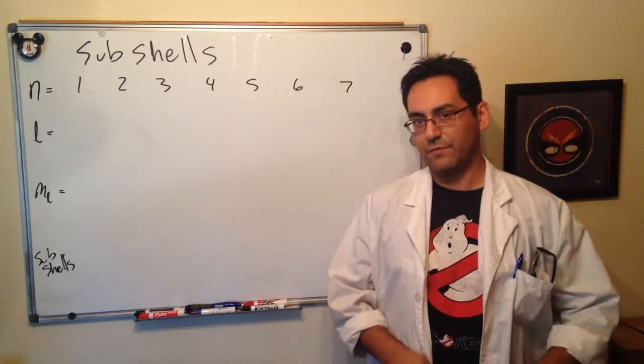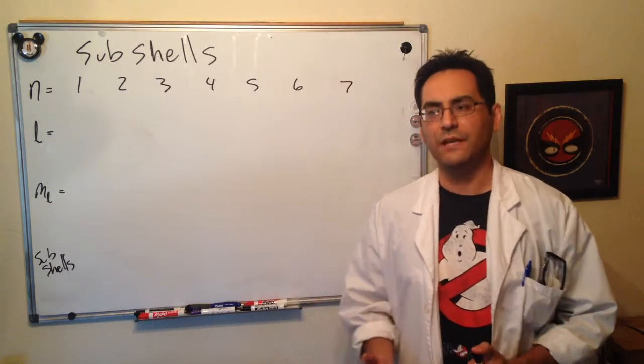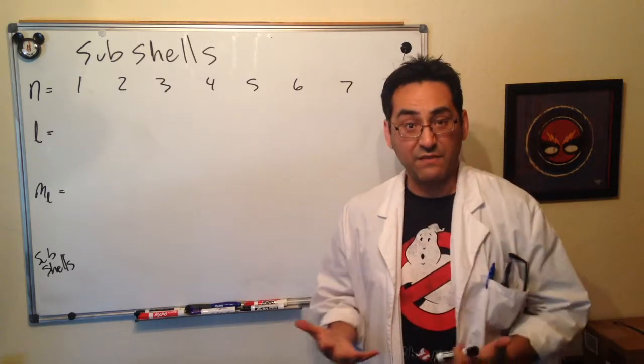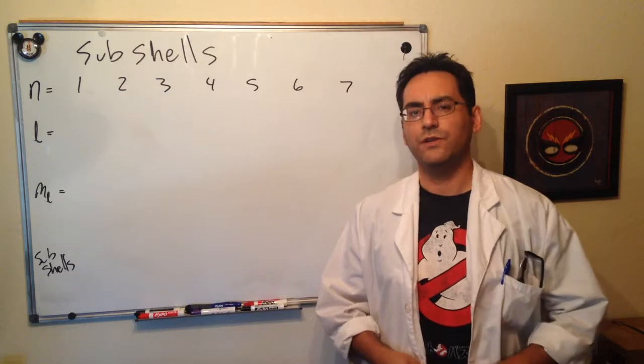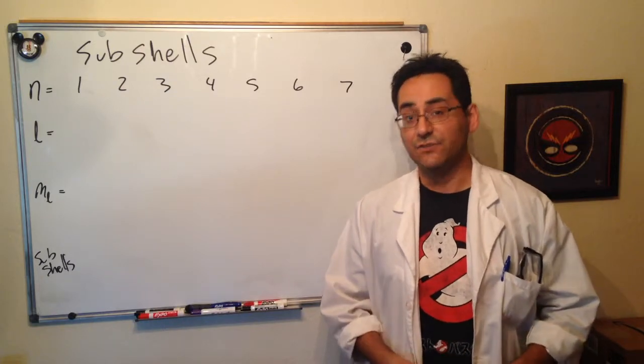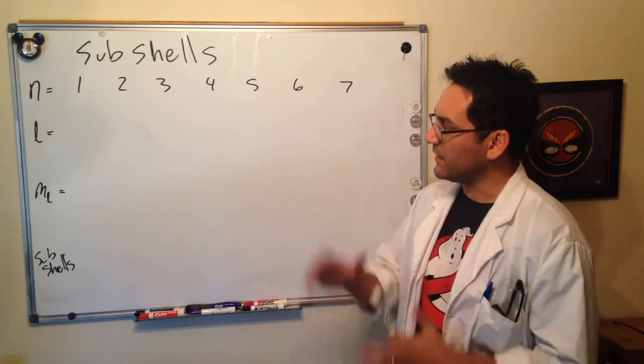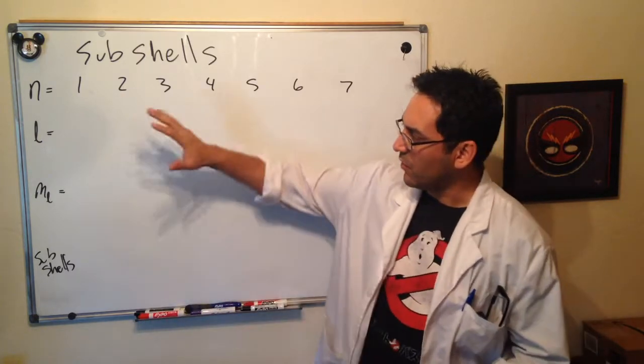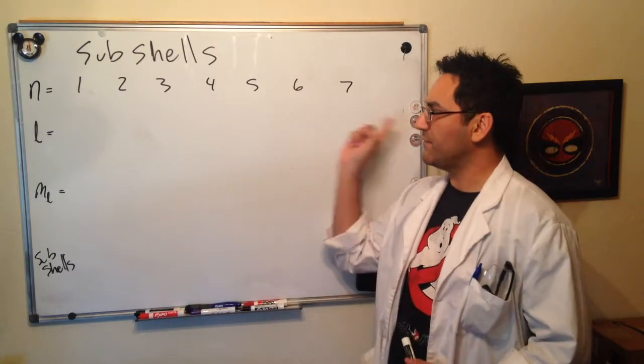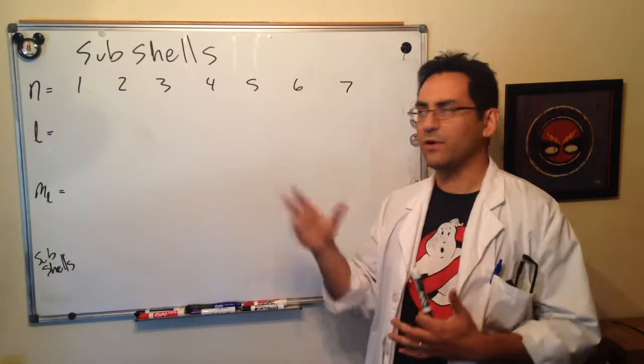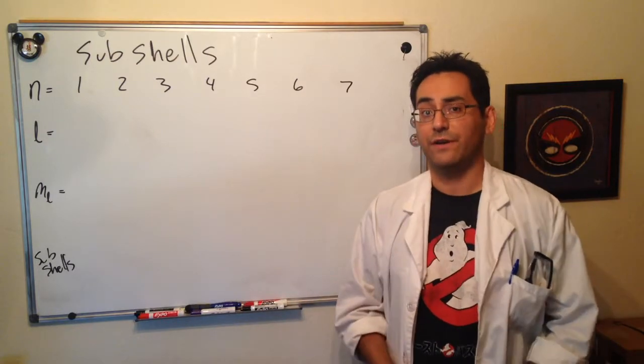We're going to talk about subshells now, because the values of these quantum numbers end up determining the subshells that electrons fill in. And this is important information for when you are required to write electron configurations, which is the topic of the next video. So, let's figure out all the different values of these quantum numbers for given values of n. And remember, each of these n's corresponds to a row of the periodic table.